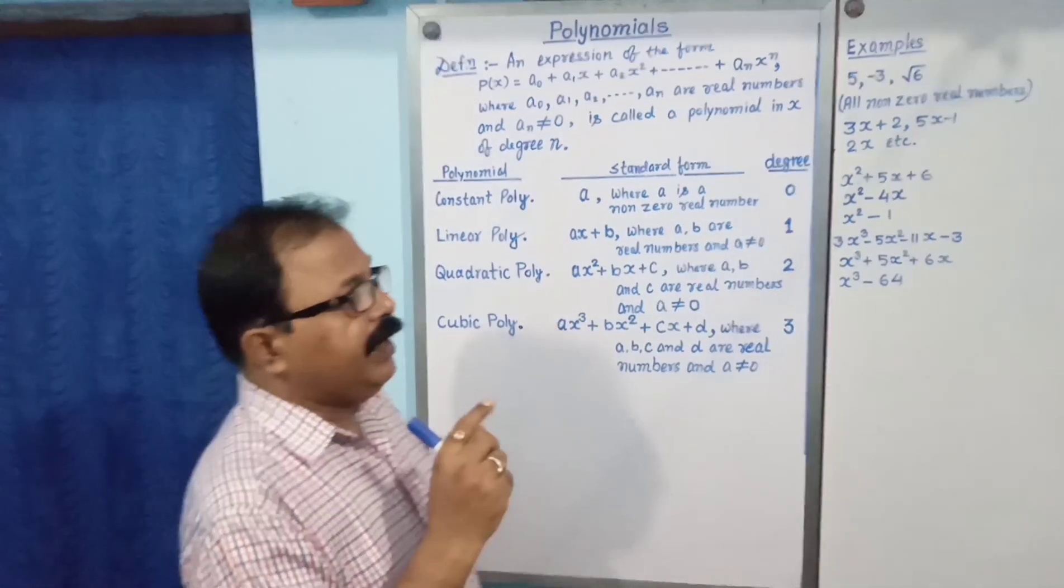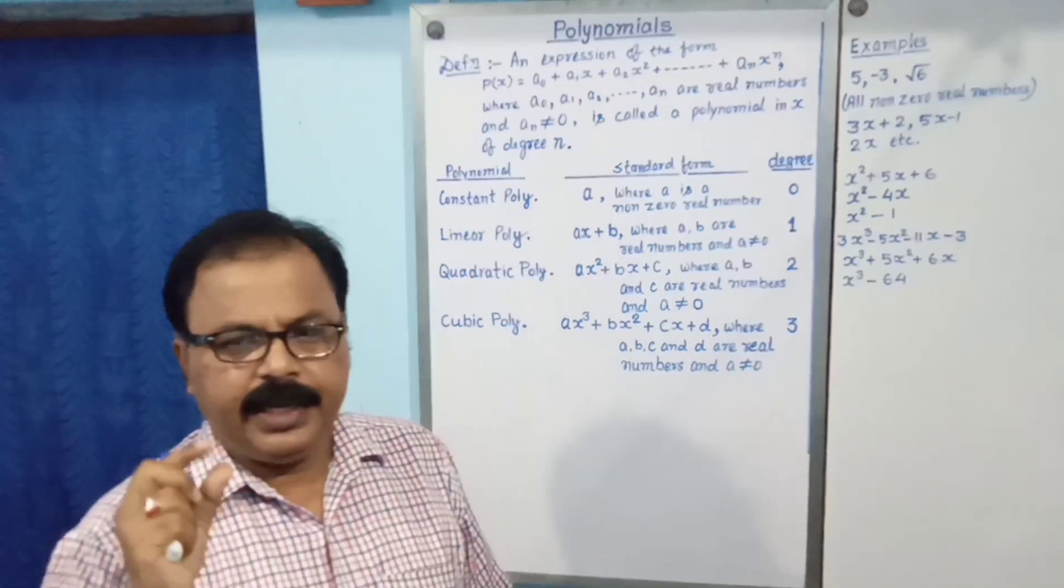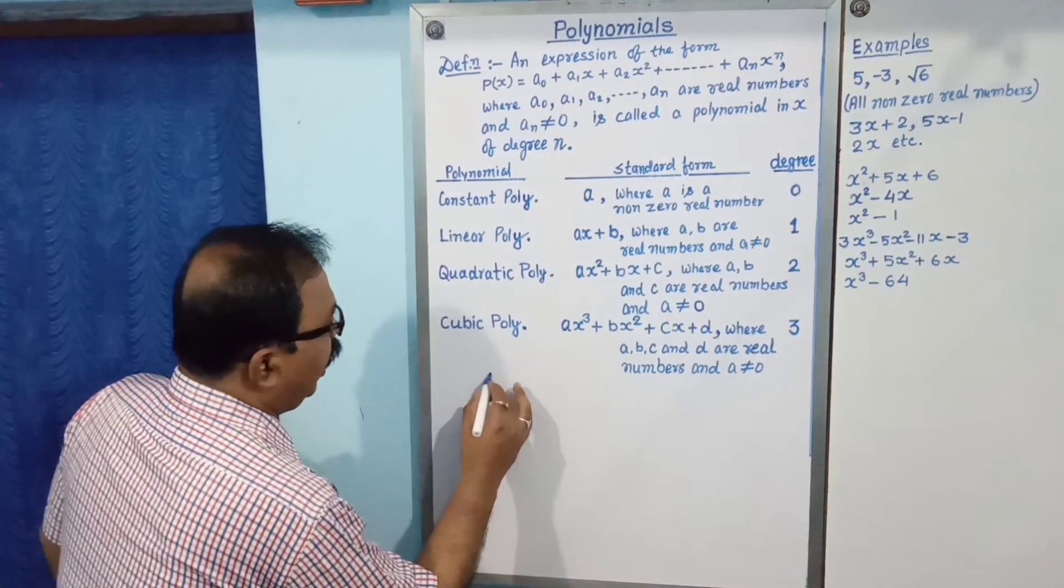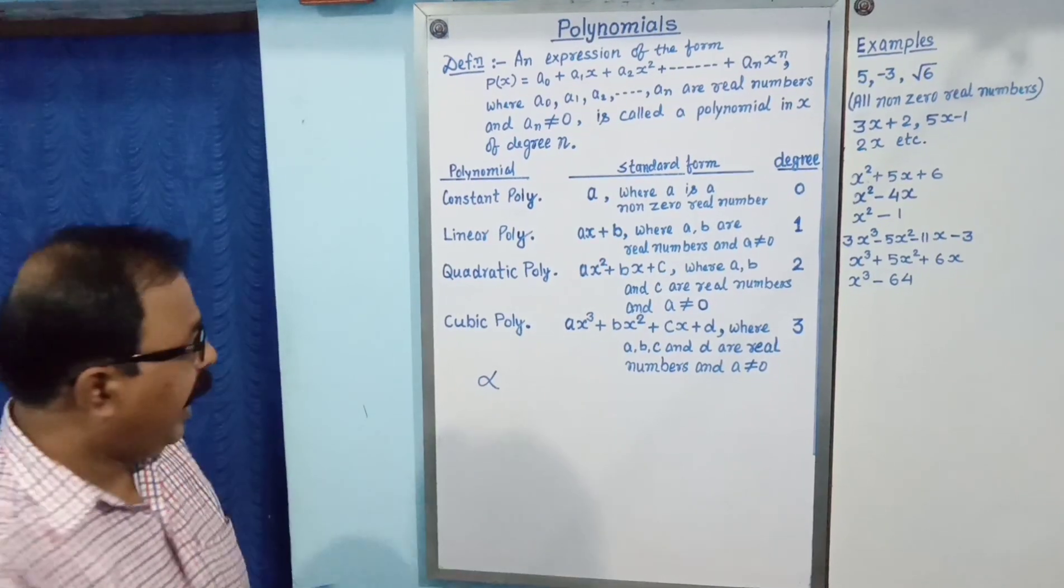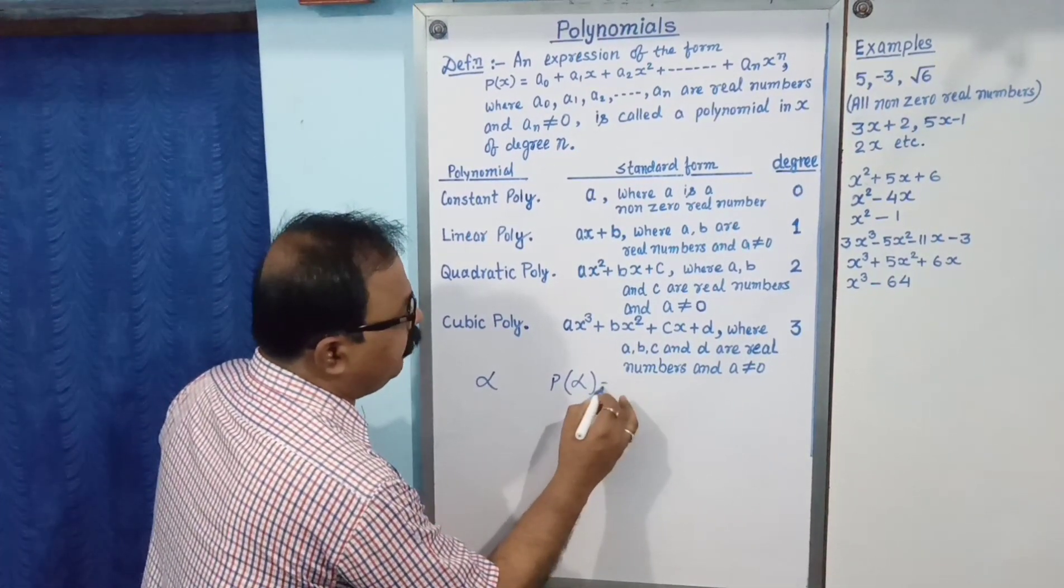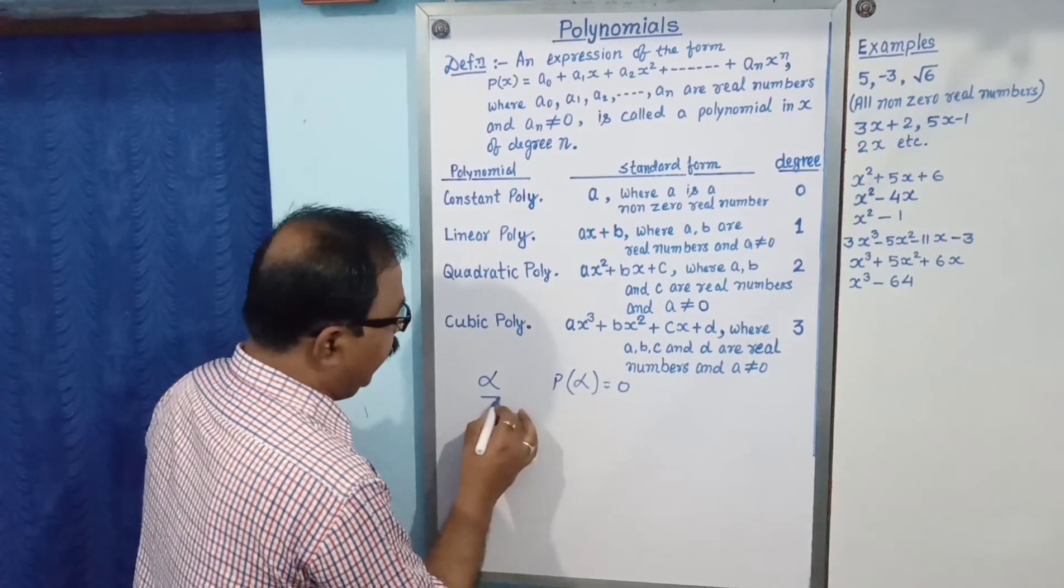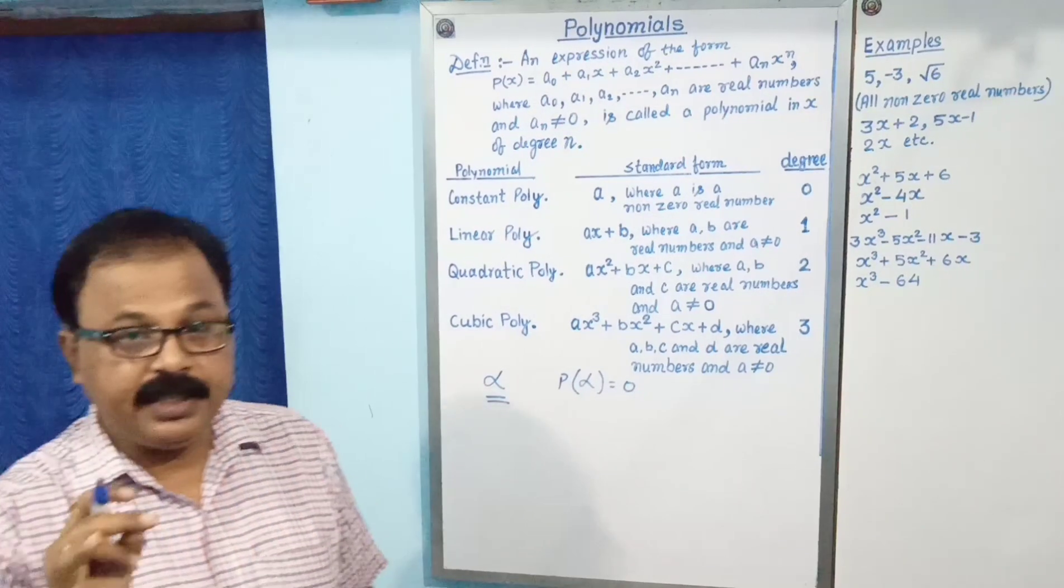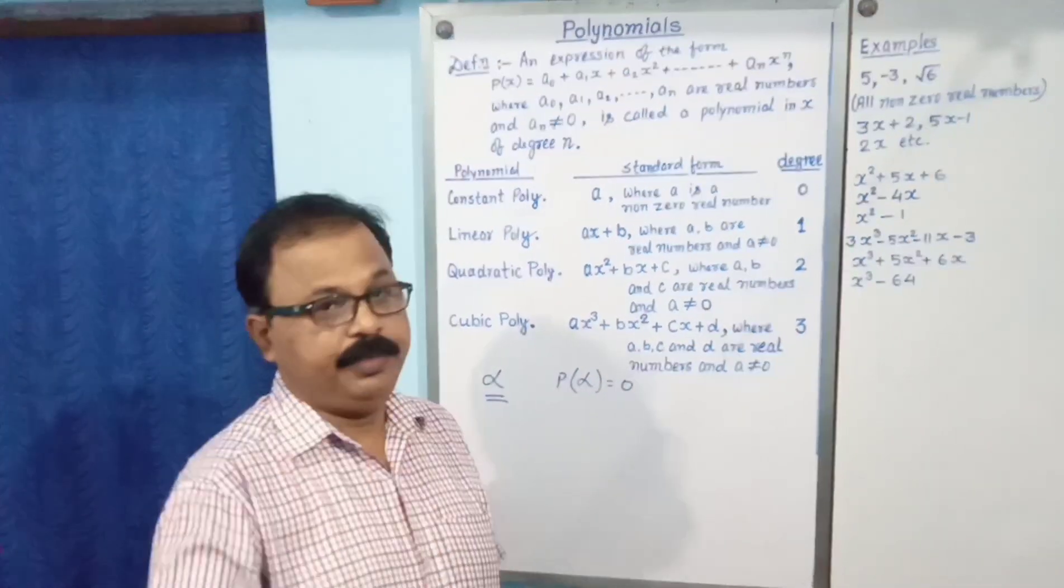If alpha is a real number. Let alpha is a real number. And if P(alpha) equal to 0, then that alpha is a zero of polynomial. This is the definition of zero of a polynomial.